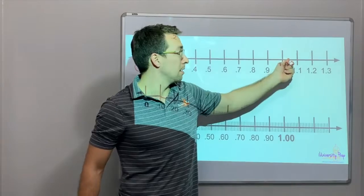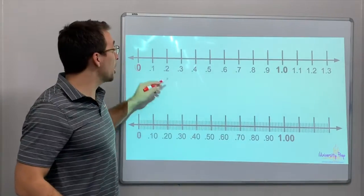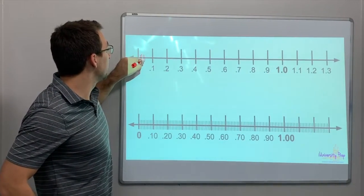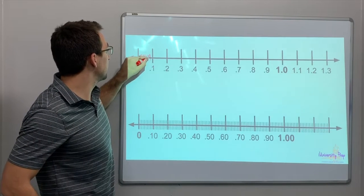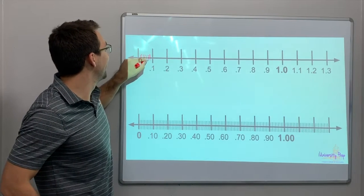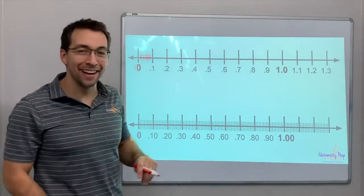Looking at zero to one. So this is tenths. If we wanted to turn it into hundredths, we could add one, two, three, four, five, six, seven, eight, nine, ten. There we go.